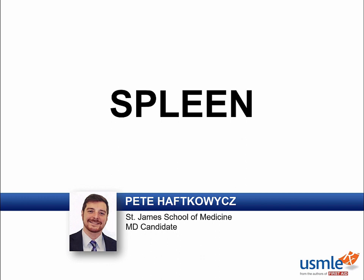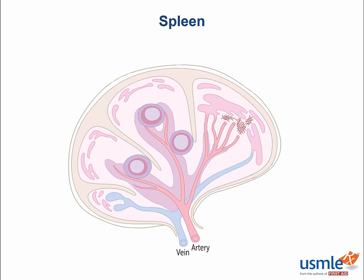Just as the lymph nodes are responsible for filtering lymphatic fluid, the spleen is in charge of filtering the bloodstream. The spleen is an organ located in the left upper quadrant. It typically lies between the left 9th and 11th rib. This is an important point to keep in mind if you ever have a patient that shows up with some sort of abdominal or posterior trunk trauma to that region.